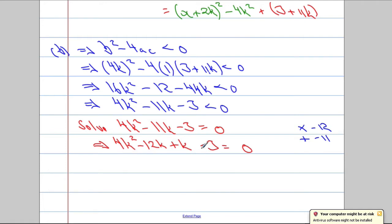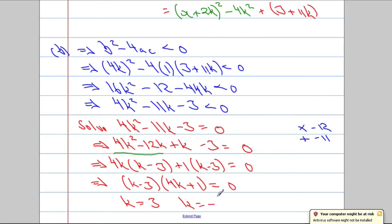And I'm going to write this negative 11k in a slightly different way. I need the two numbers to multiply to 4 times negative 3, which is negative 12, but they're going to have to add to negative 11. It's got to be negative 12 and plus 1. So minus 12k plus 1k. Now we're going to factorise by grouping. We can take out 4k, which leaves us with k minus 3. And if I factor out a 1, we're going to get k minus 3.